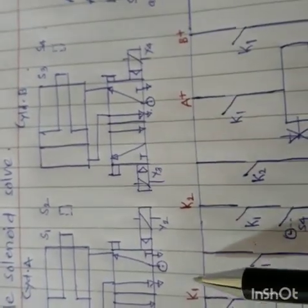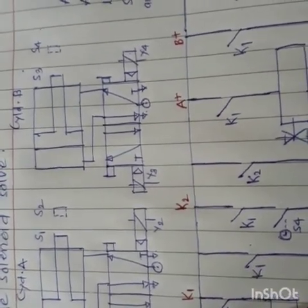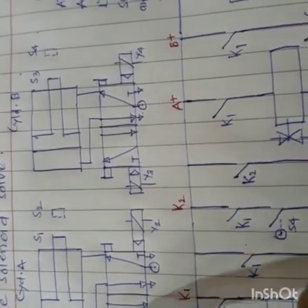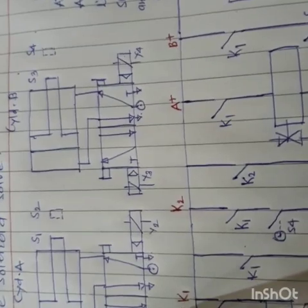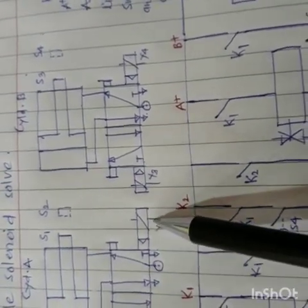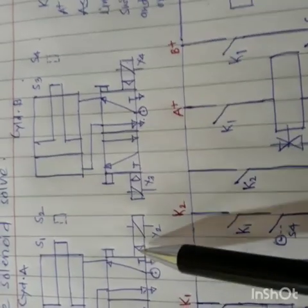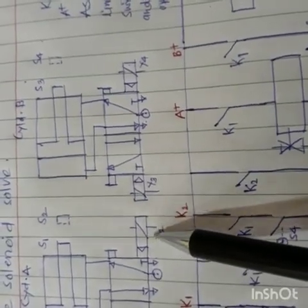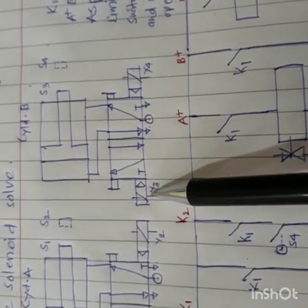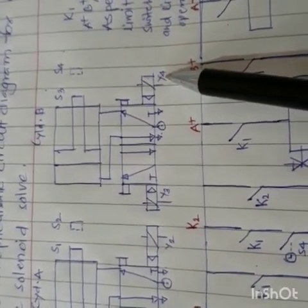As per the given information, Y1 solenoid will be responsible for shifting the position from left to right. So Y1 is responsible for A plus operation, and Y2 will be responsible to shift from right to left — so Y2 is responsible for A minus operation. Similarly, Y3 is responsible for B plus operation and Y4 is responsible for B minus operation.